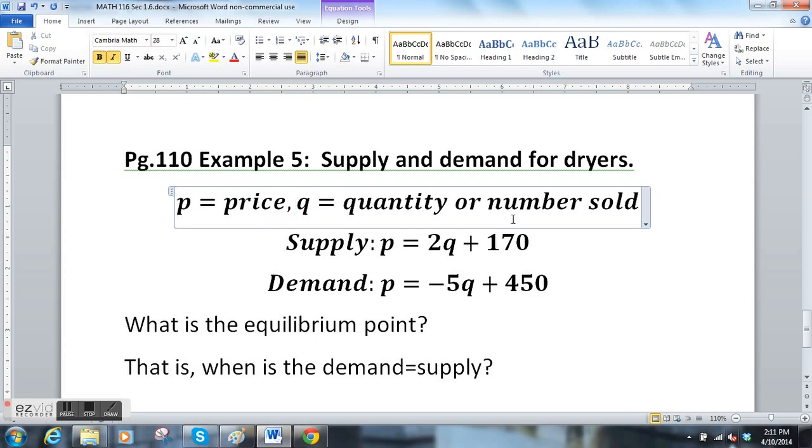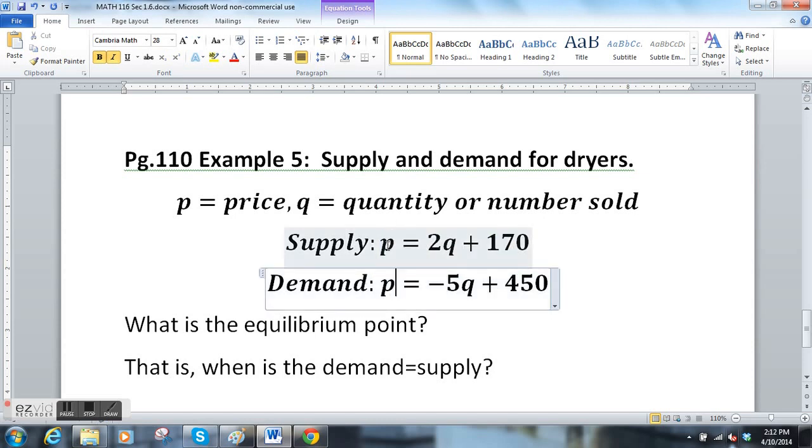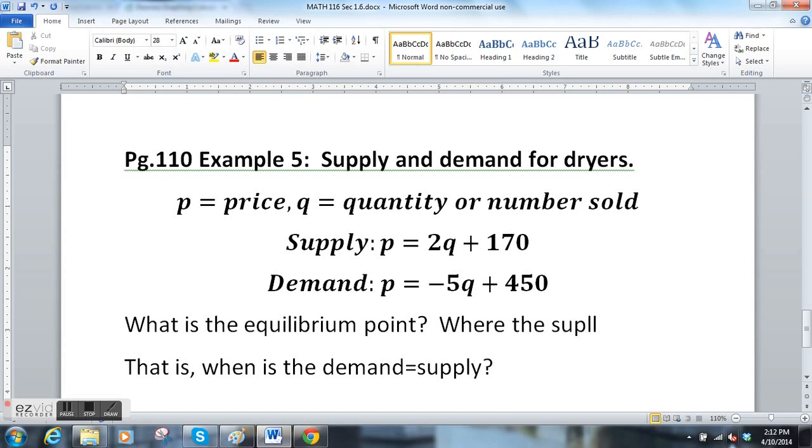It's a supply and demand for dryers. On the page they give you a nice function and break through all the detail. Basically they say p is the price of your dryer and q is the quantity or the number that is being sold. The supply function looks like this—you're putting them on the market at this rate, there's a function based on the price and the quantity. The demand looks like this.